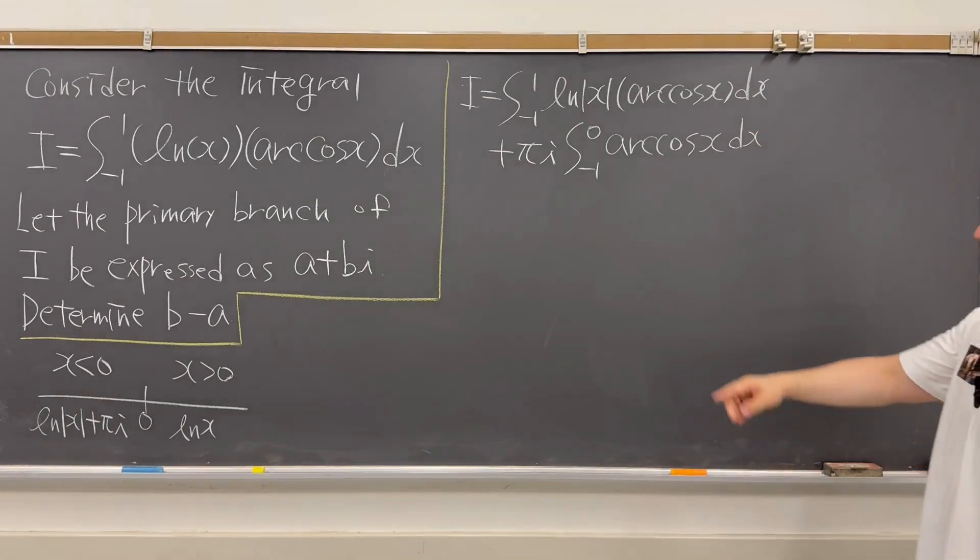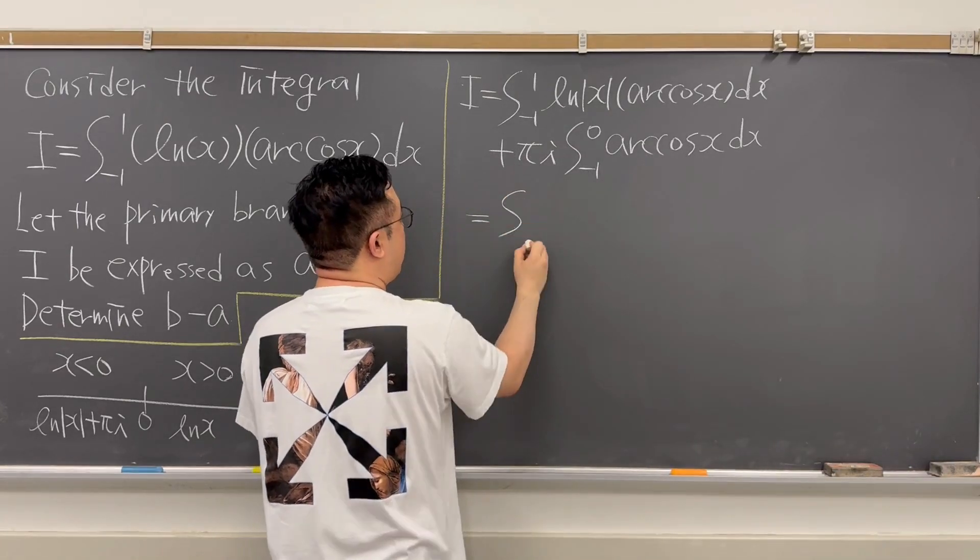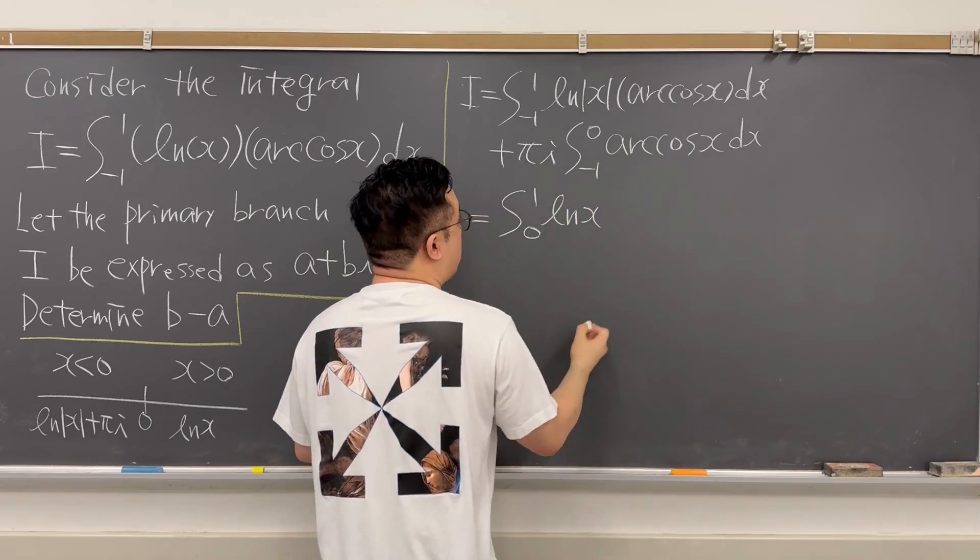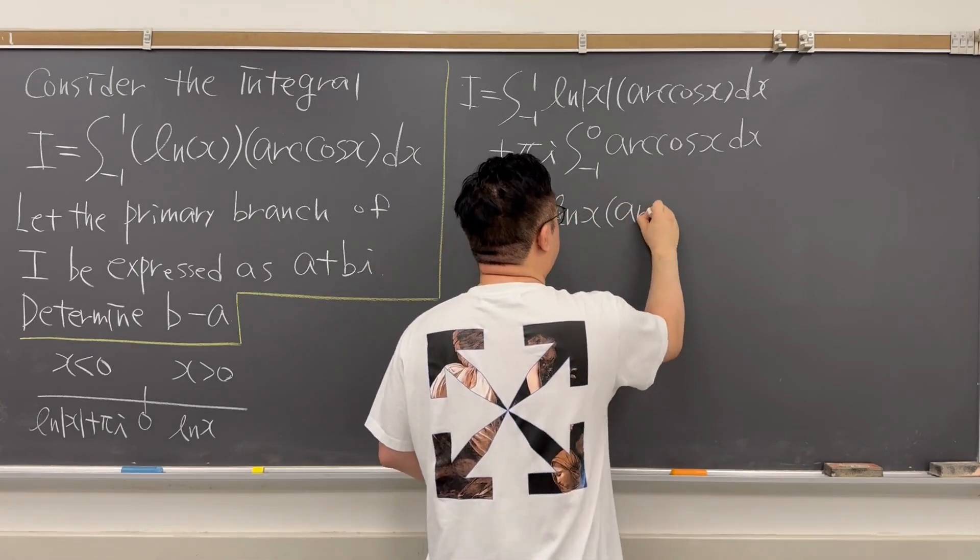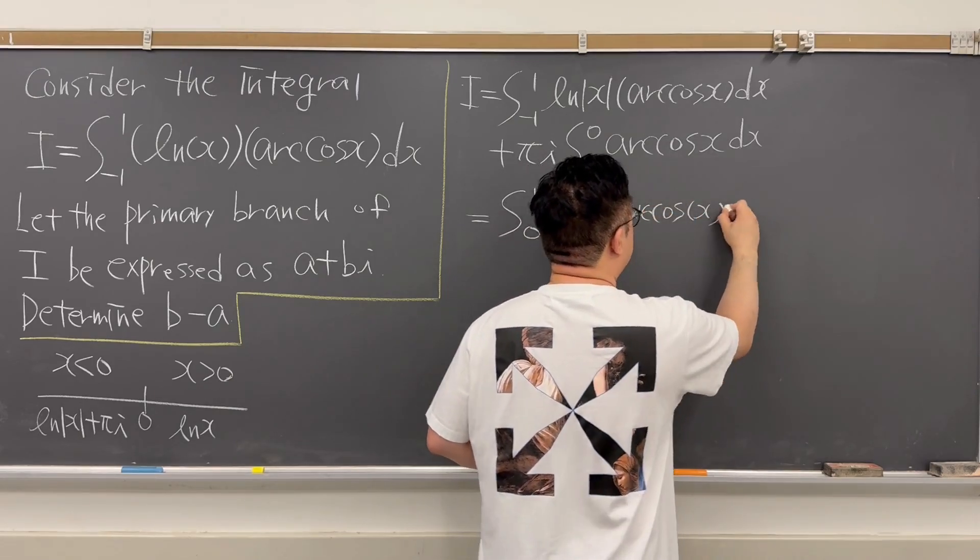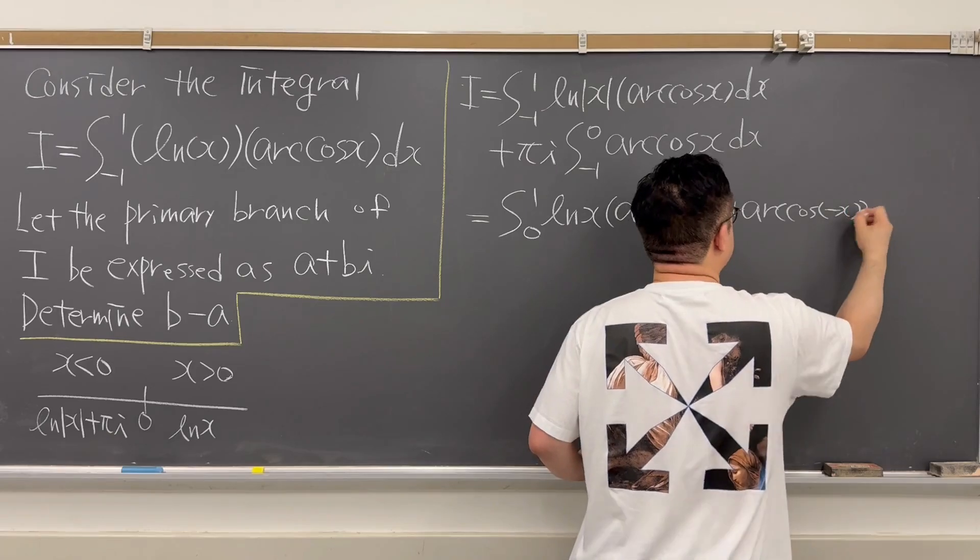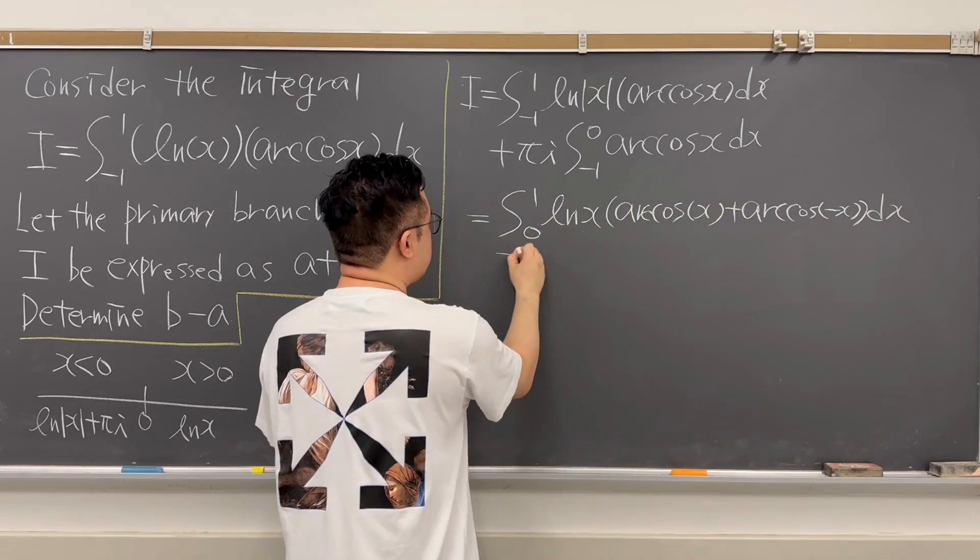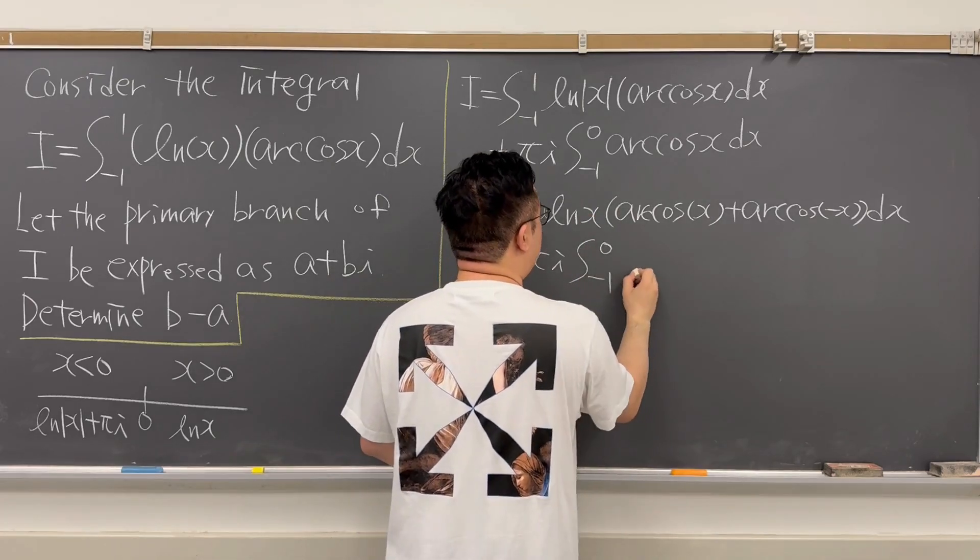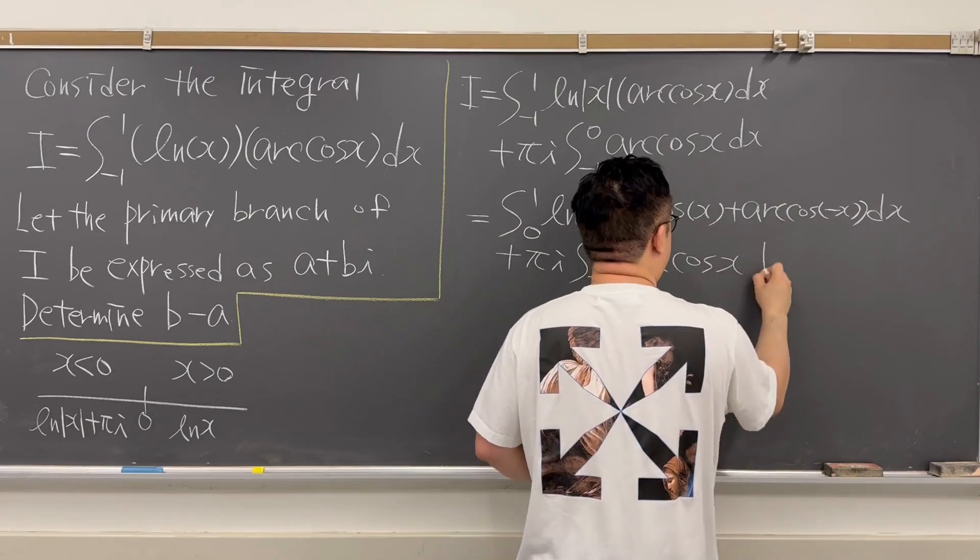And especially the first integral, we can rewrite this as integrating from 0 to 1, ln(x) multiply this with arccos(x) plus arccos(negative x) dx. And the second integral is still just πi integrating from negative 1 to 0, arccos(x) dx.